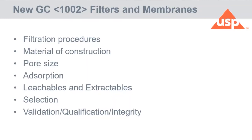We are thinking about the initial outline for this chapter: to discuss filtration procedures like by gravity, vacuum, pressure, et cetera; to discuss the material of construction of filters and membranes; pore size; the issue of absorption of the drug substance or any other component of the formulation; the issue of leachables and extractables because this can interfere with your quantitative step; how you are going to make the selection and how you are going to validate, qualify, or even check the integrity. There are several procedures that you can use to evaluate and check the integrity of the skin, and we would like to discuss these in new Chapter 1002.